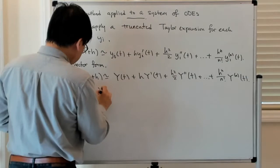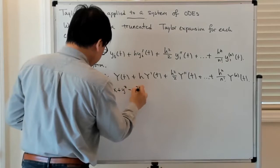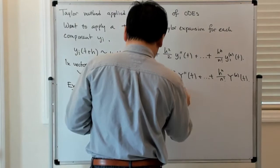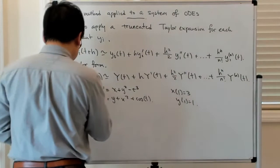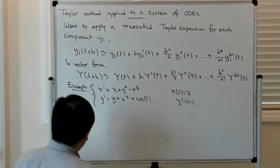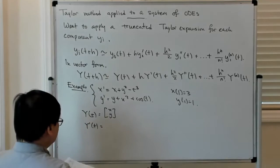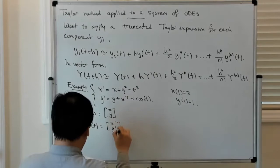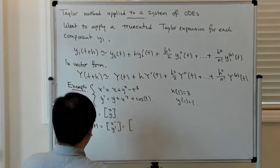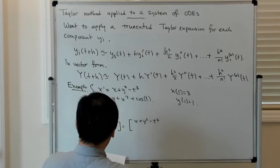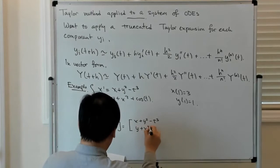Let's have x′ = x + y² − t³, and y′ = y + x³ + cos(t), with initial conditions x(1) = 3 and y(1) = 1. So big Y(t) is the vector [x, y]ᵀ, and Y′(t) is [x′, y′]ᵀ = [x + y² − t³, y + x³ + cos(t)]ᵀ.